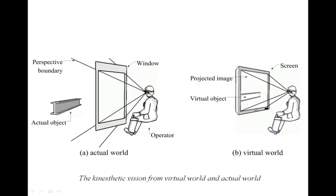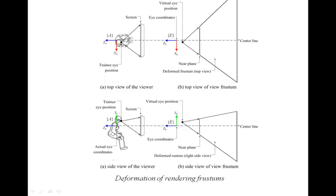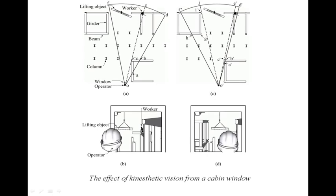The kinesthetic vision method converts the geometry of the operator's perspective frustums to virtual eye frustums in virtual environments, so that operators can see virtual scenes according to their eye positions, as they view real scenes through cabin windows with head motion. This mechanism supports the 3D perception process generated by dynamic viewpoints.